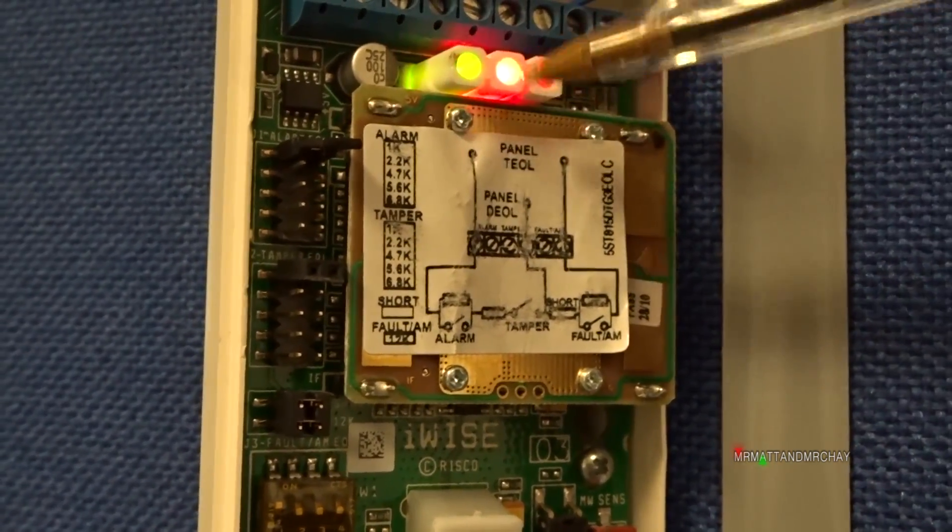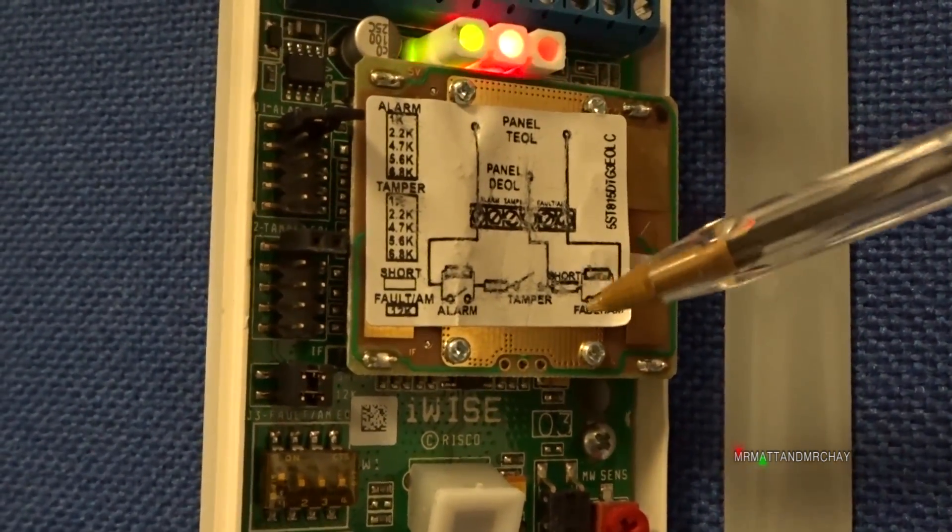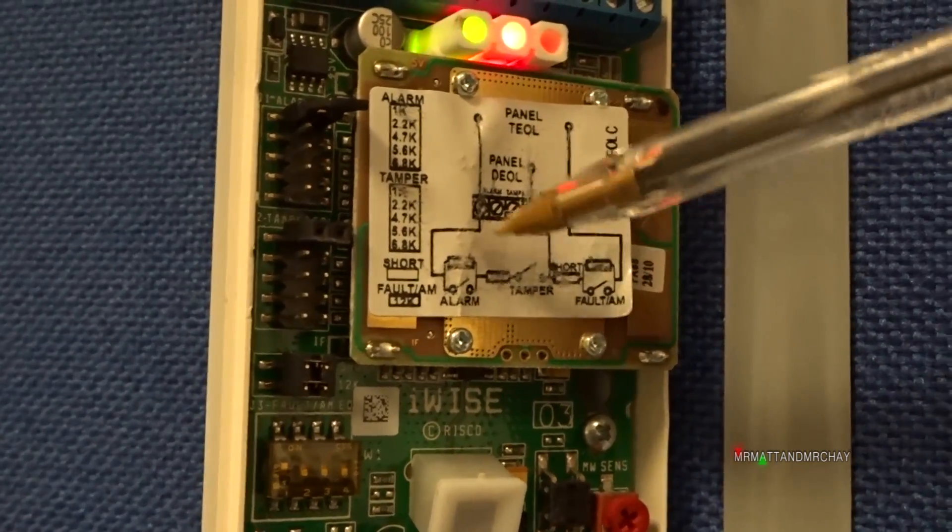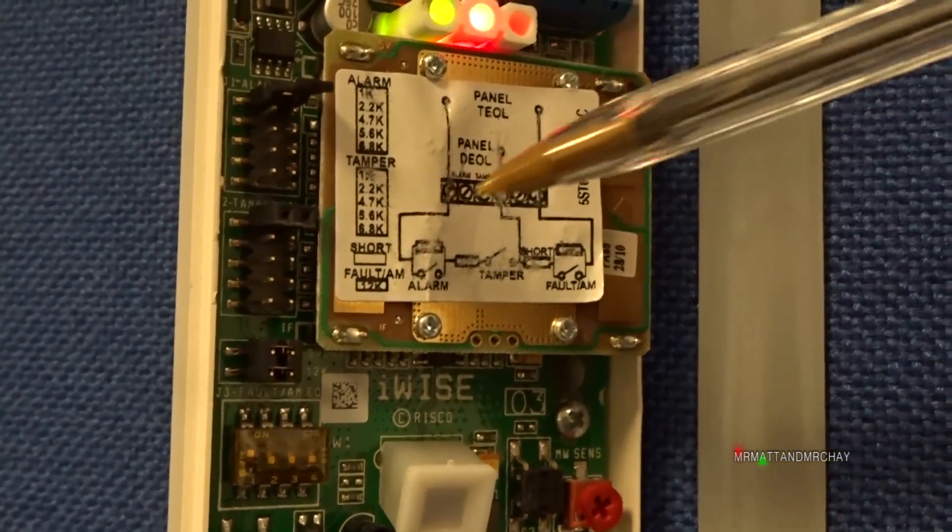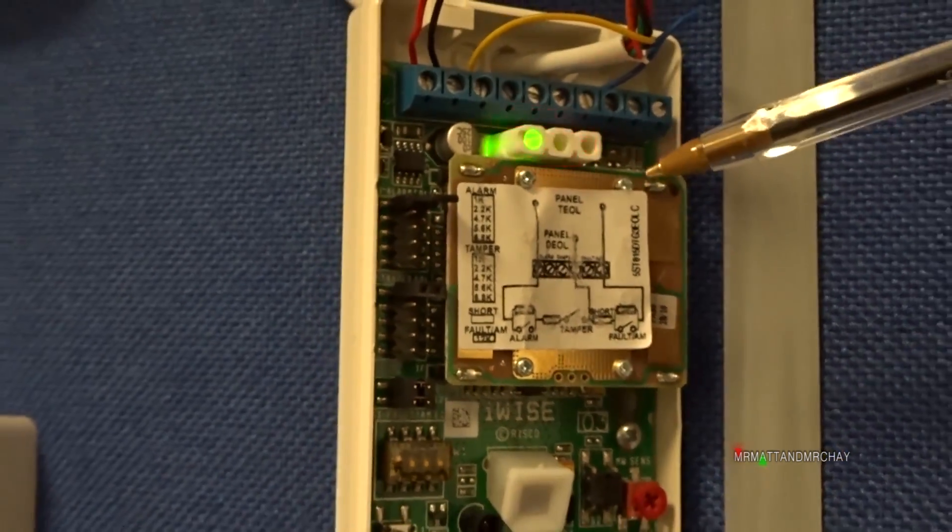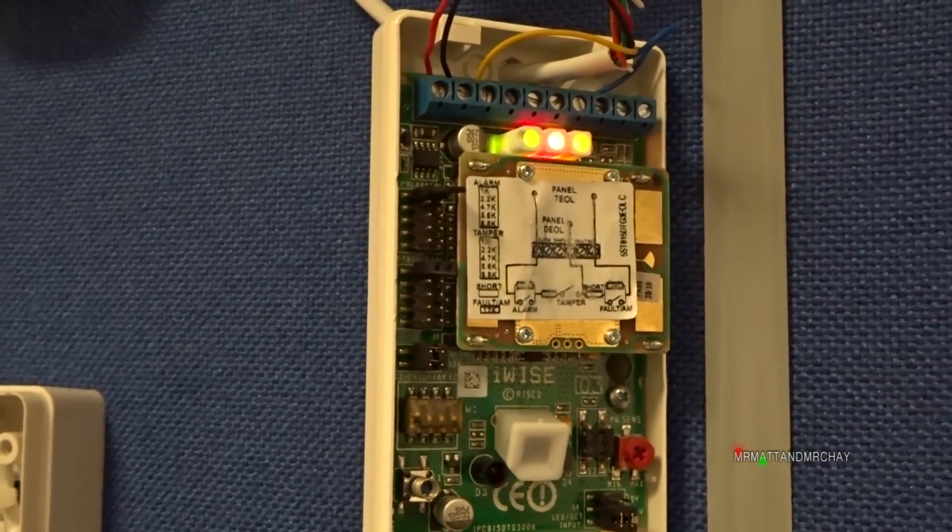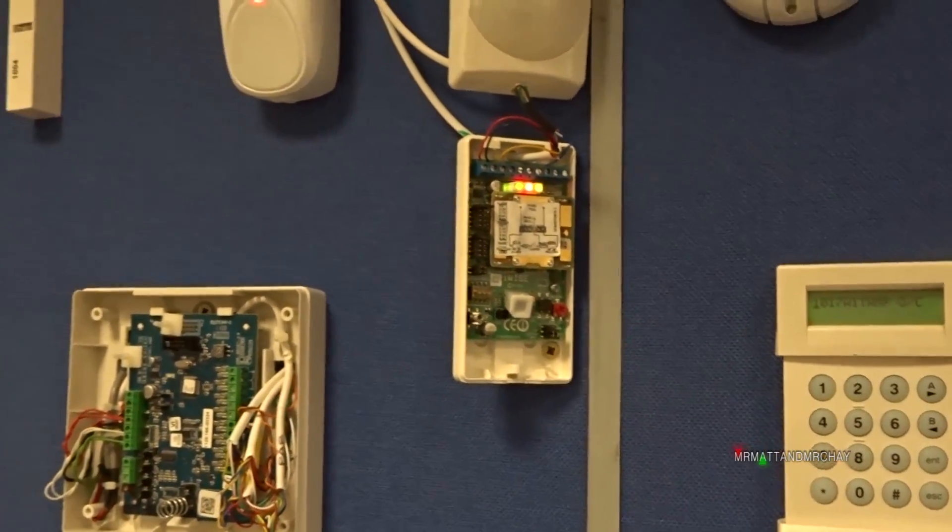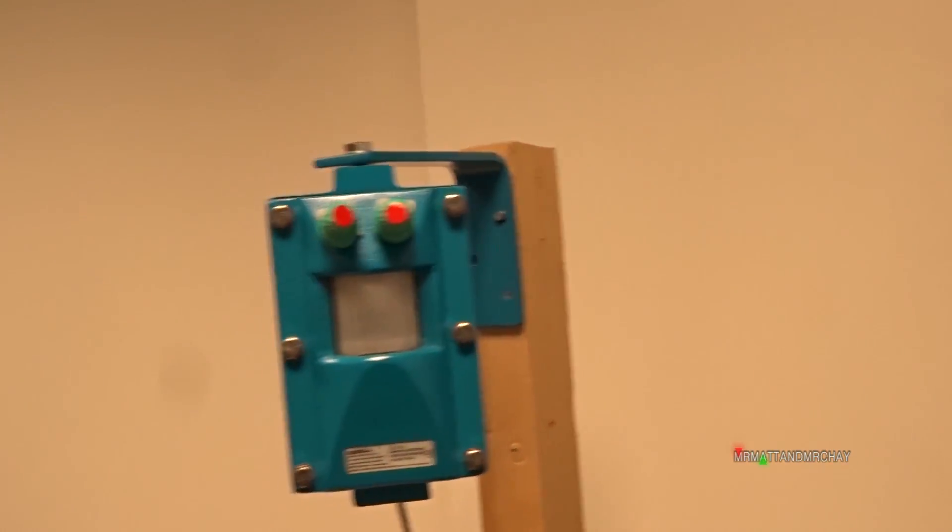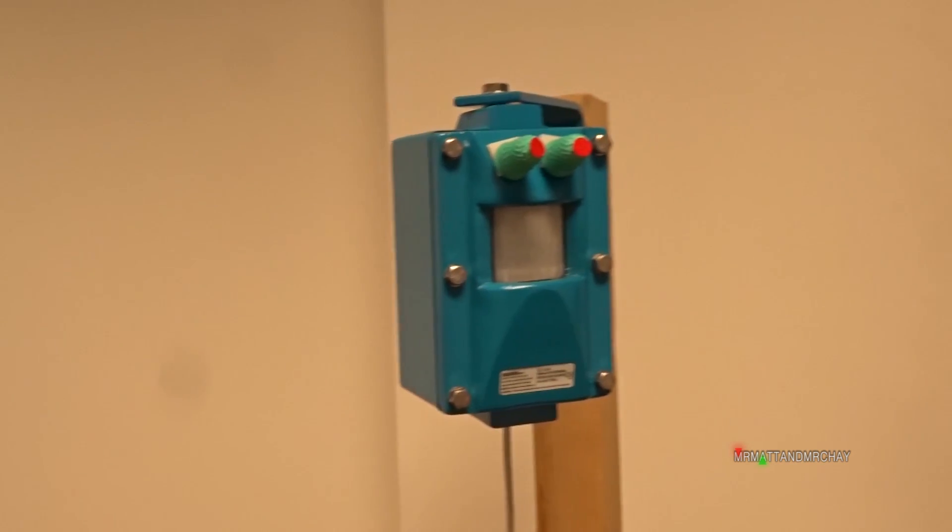If the detector detects motion and it's masked, then you're reading this resistor, this resistor, and this resistor. 12 plus 1 plus 1 is 14k. Read by the control panel. Now that is a masked and active condition. That's how a normal detector works. Now we go back to this thing.